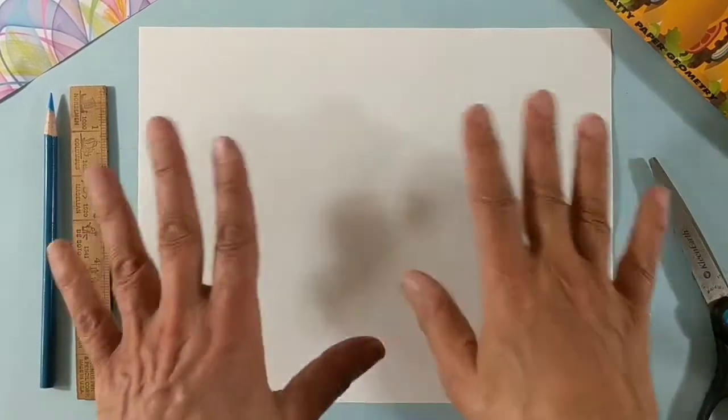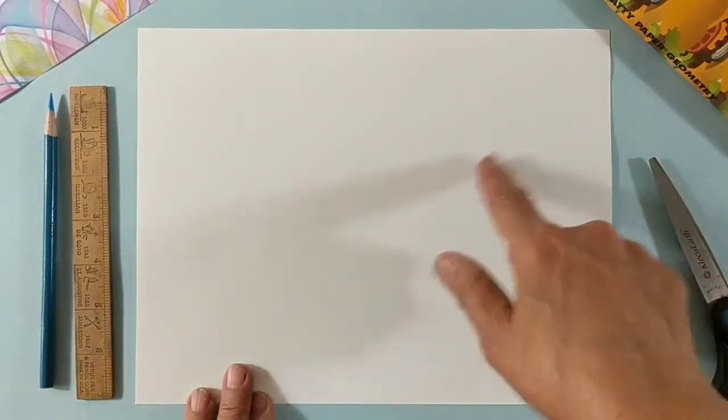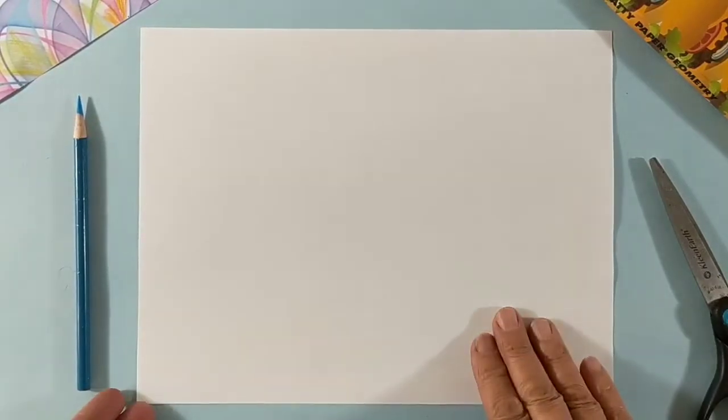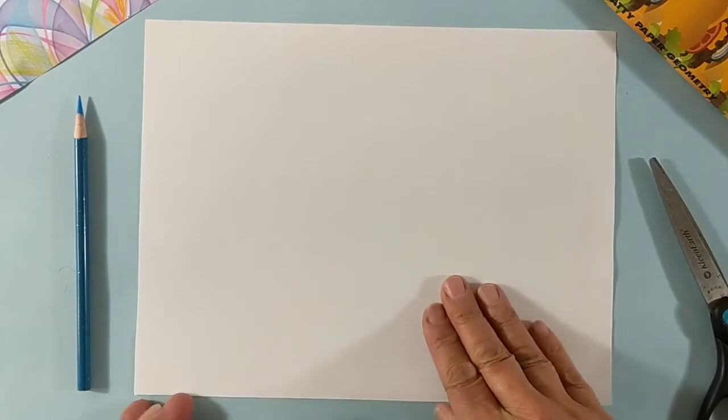If I want to make a square out of a rectangle and not use a ruler, there's a very nice way to do it.